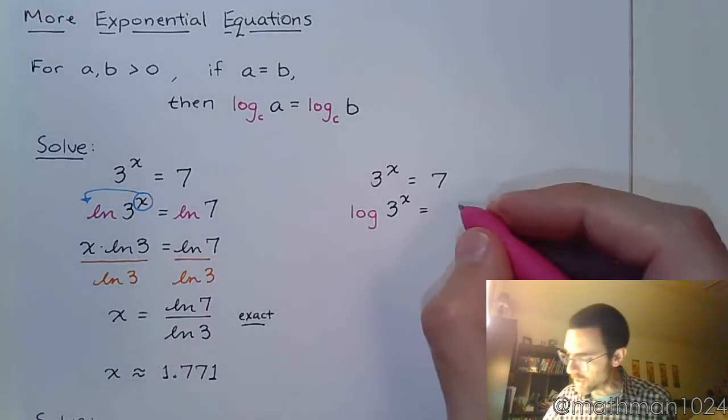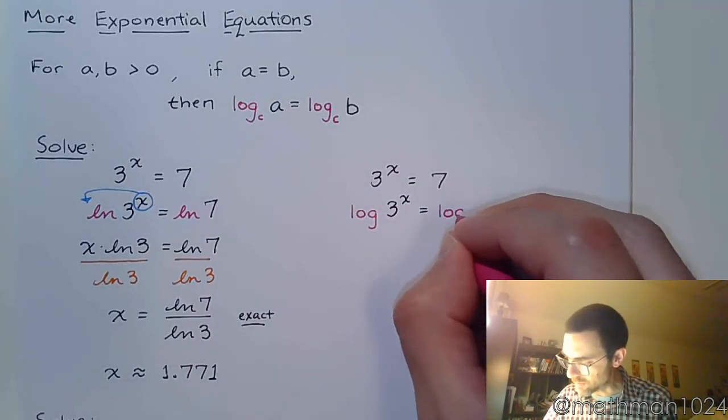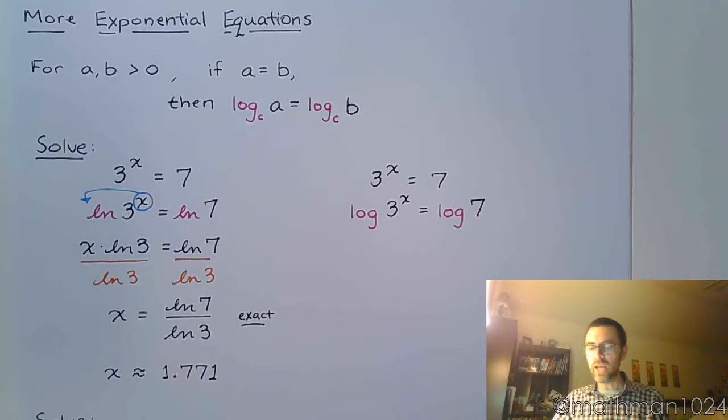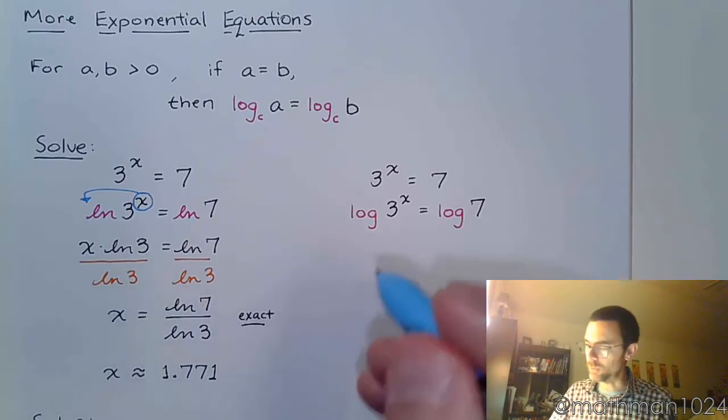You could instead use the common log and say log of 3 to the x is equal to log of 7, like this. Again, the same property for logarithms will apply.